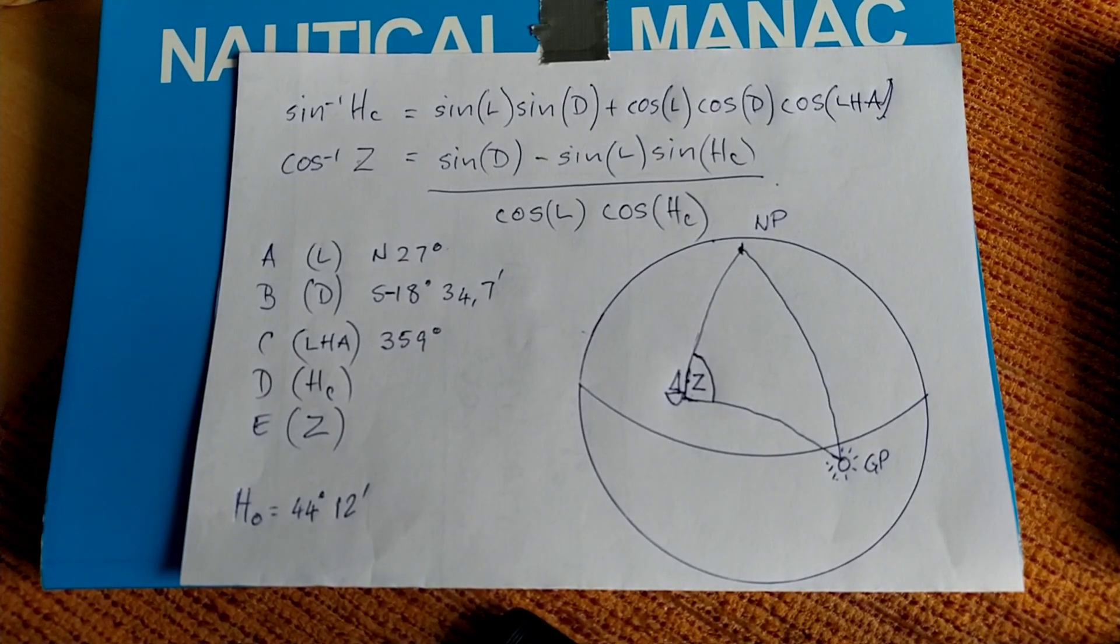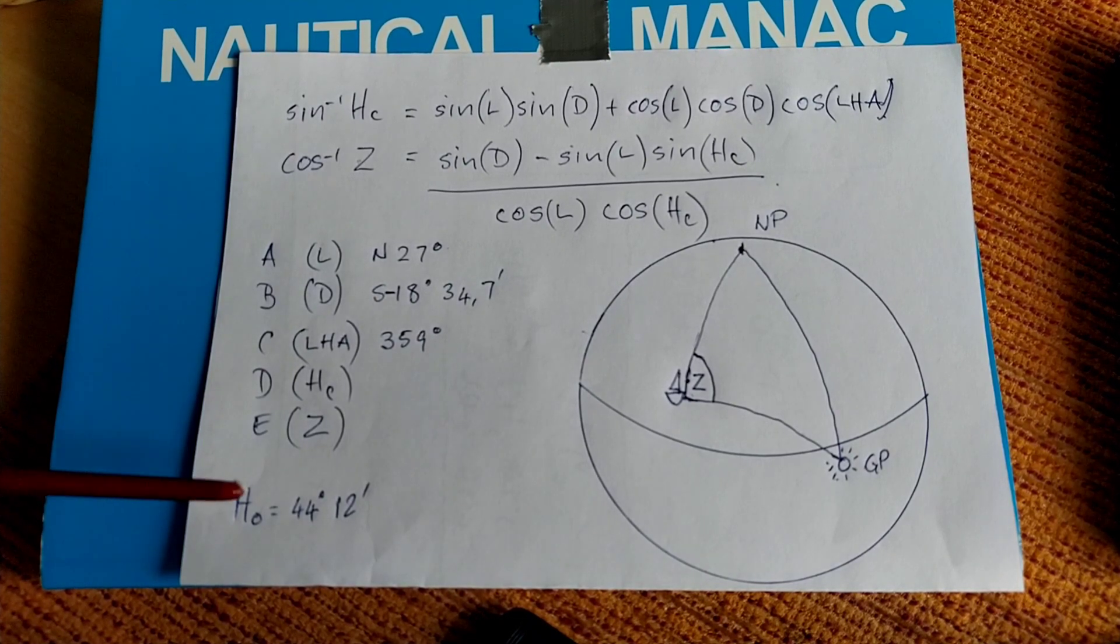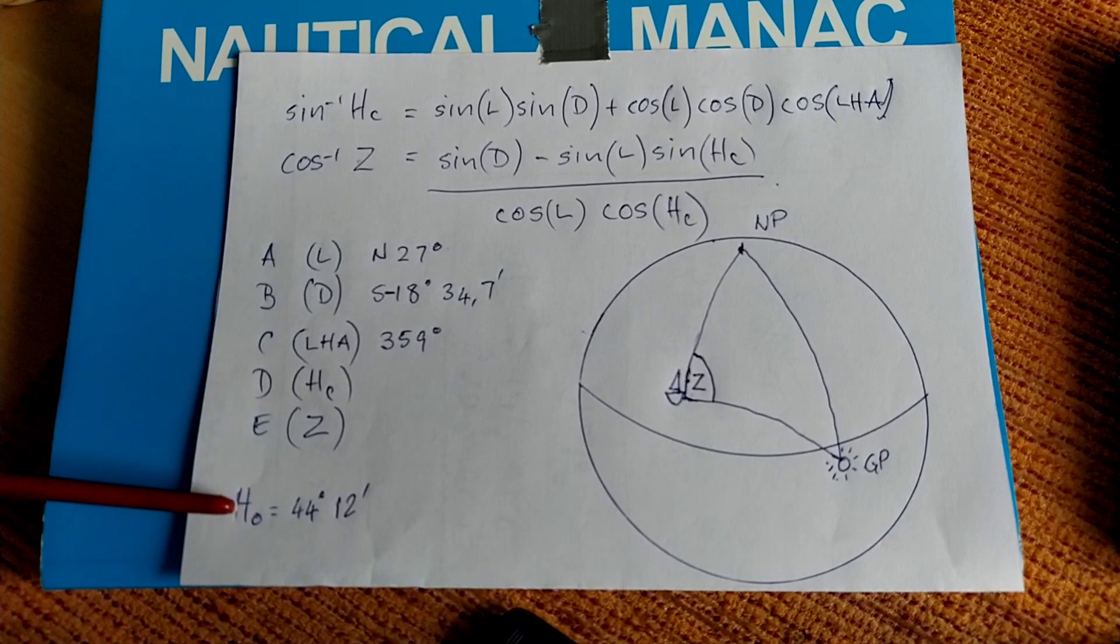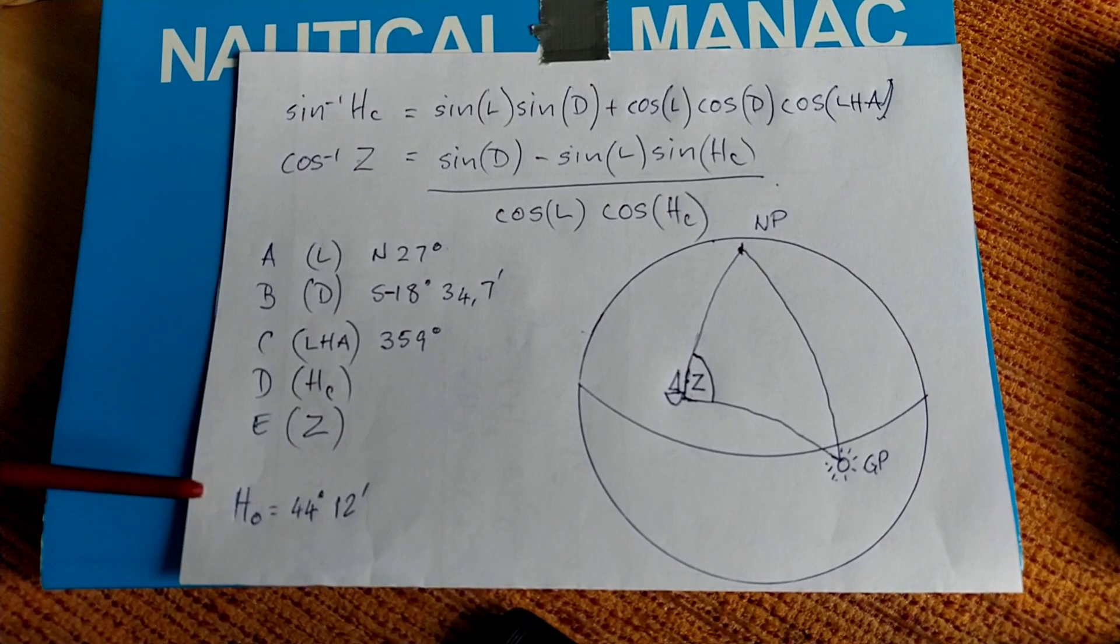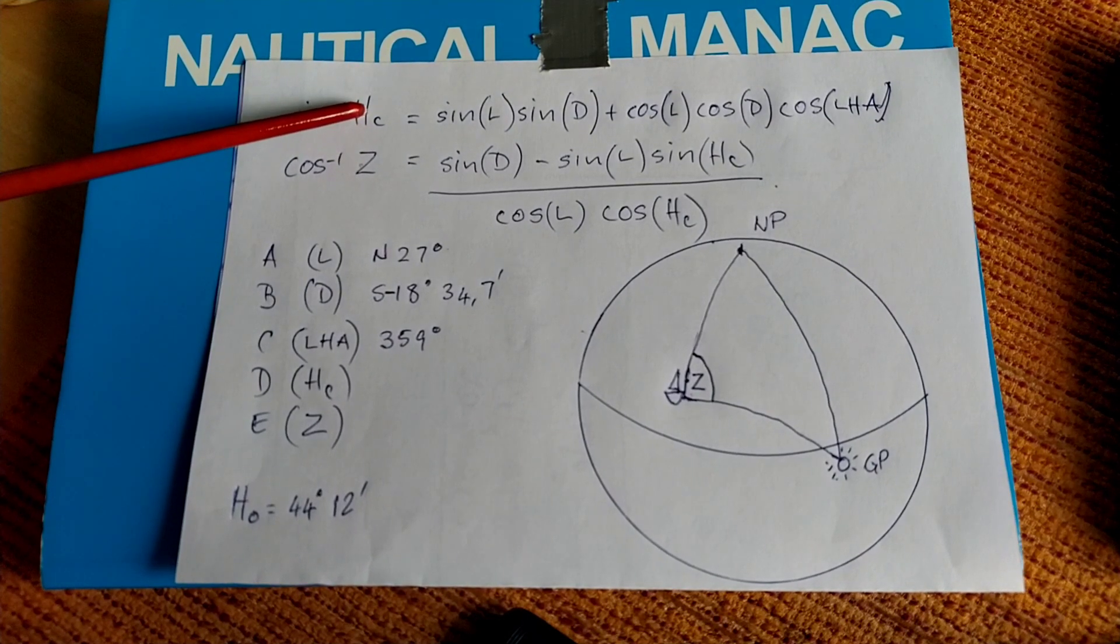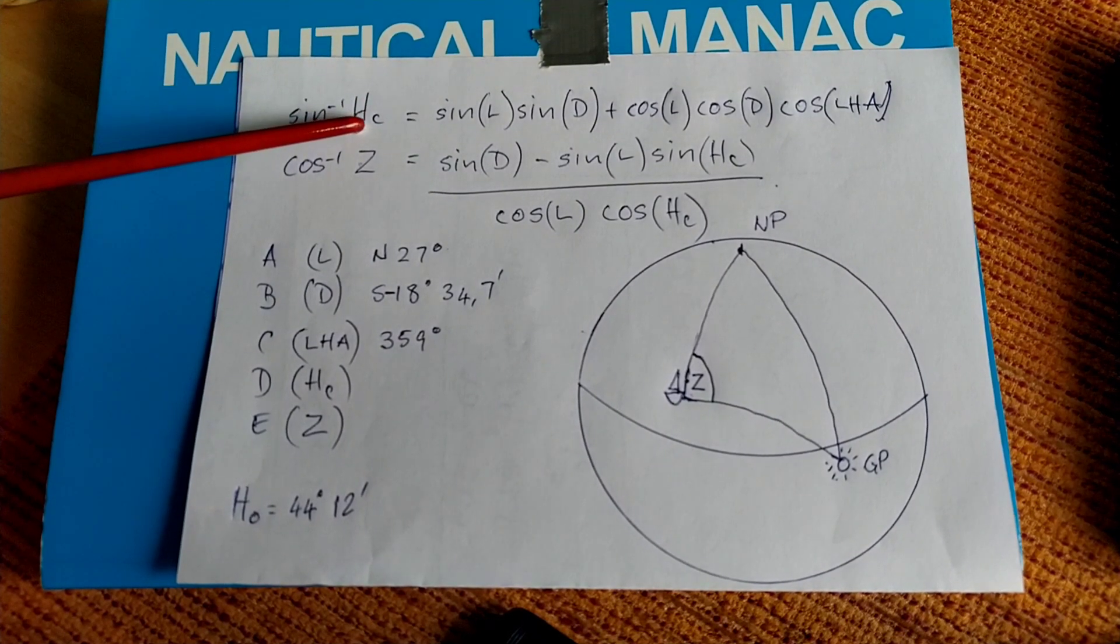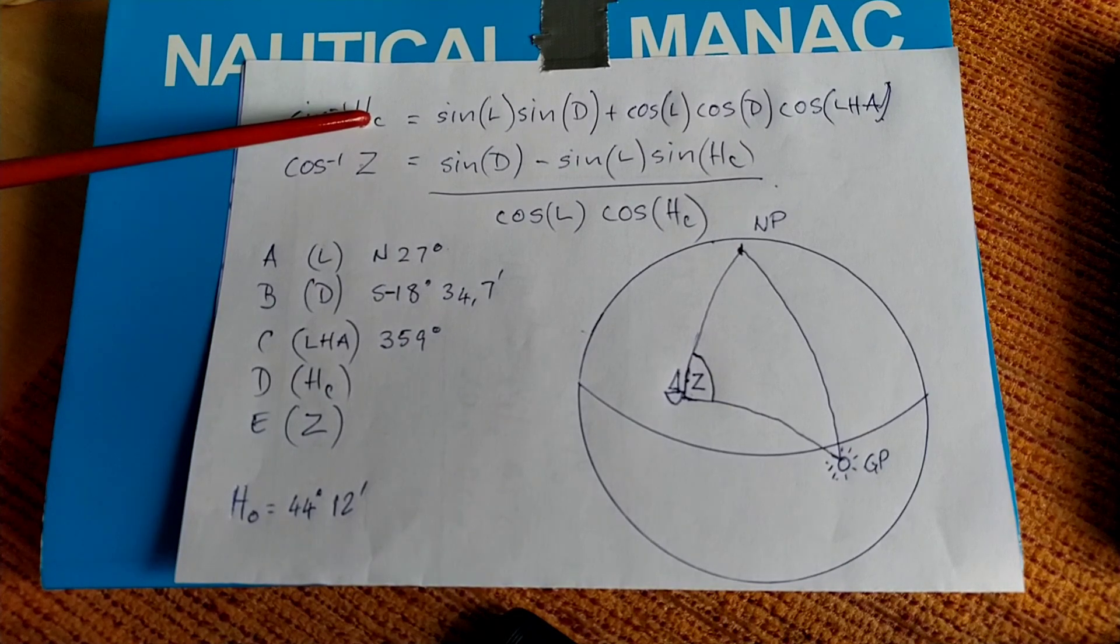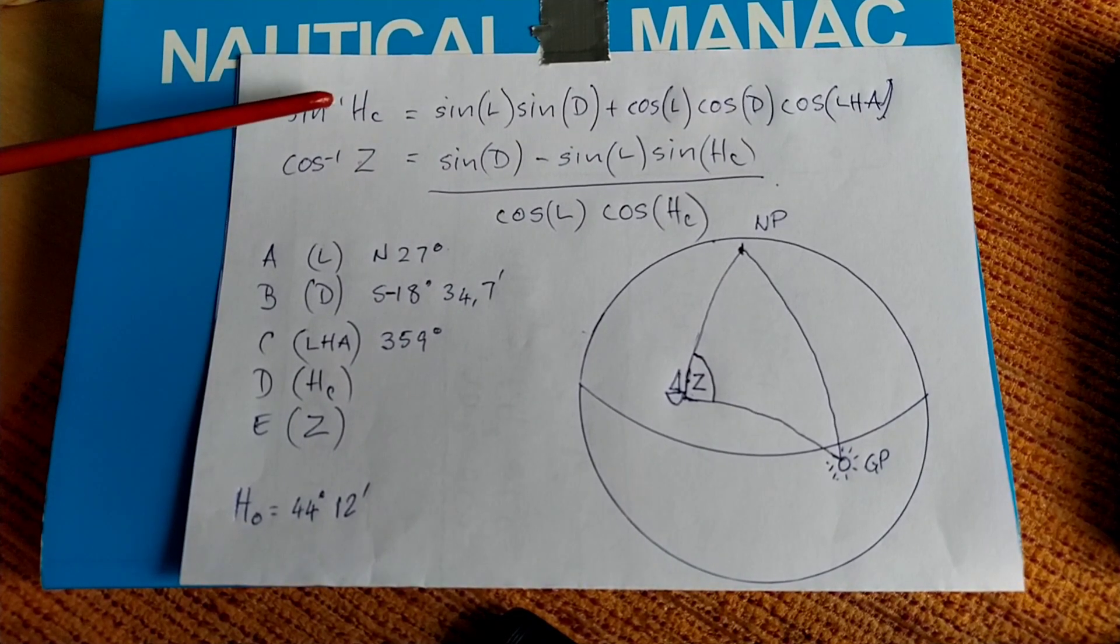The altitude intercept method is the most commonly used method of sight reduction when using a sextant for celestial navigation purposes. Put very simply, what we do is we compare an observed altitude, that's an altitude that was actually measured with a sextant, corrected of course, with a calculated altitude that's given to us by a sight reduction table, in most instances it'll be H0229 or H0249 air navigation tables.